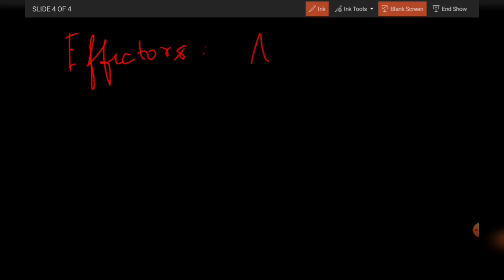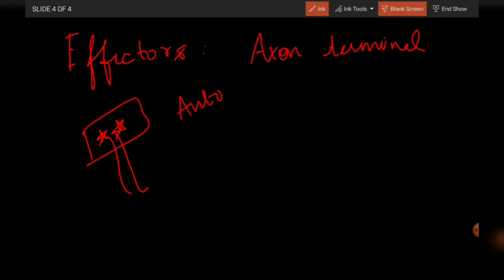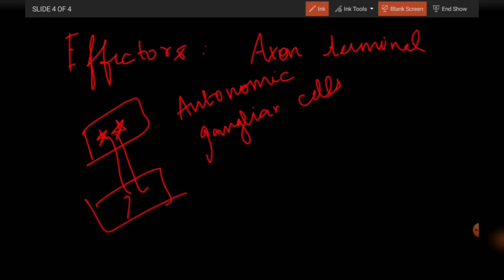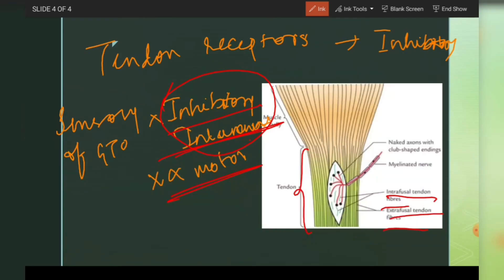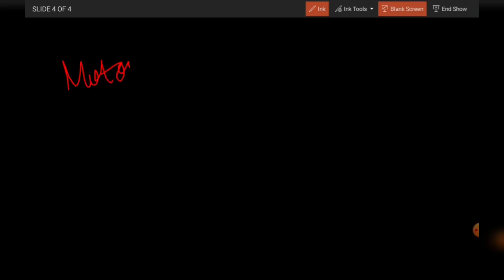Now, after learning about receptors, let's learn about effectors. Effectors are nothing but axon terminals of autonomic ganglia cells — their axon terminals are called effectors. An important term in this context is the motor unit.